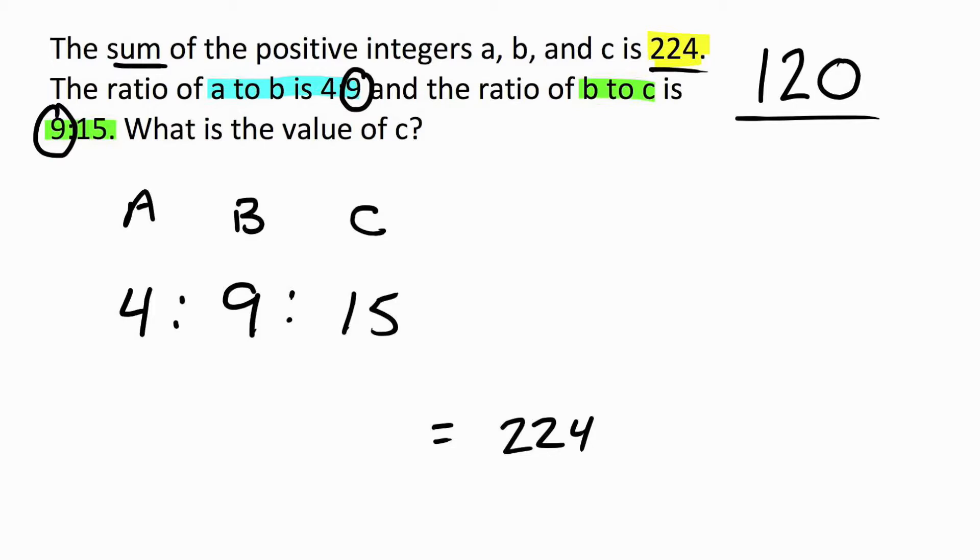However, this does not equal 224. What does this equal? Well, we have 4 plus 9 plus 15 is 28. So, what I like to do is find a multiplier. 28 times what equals 224? Well, let's see.